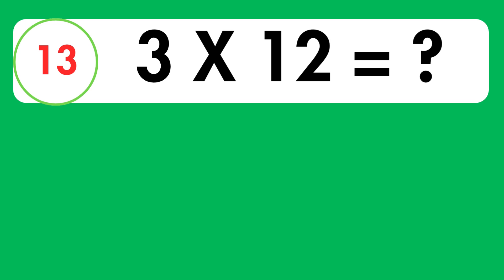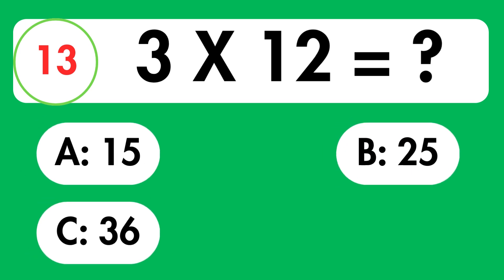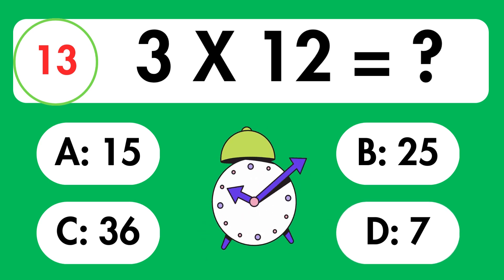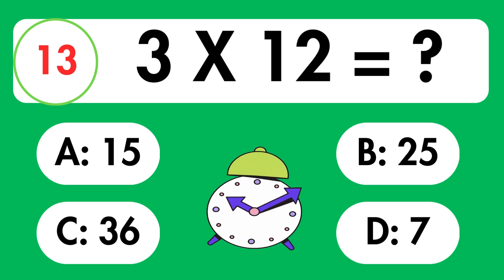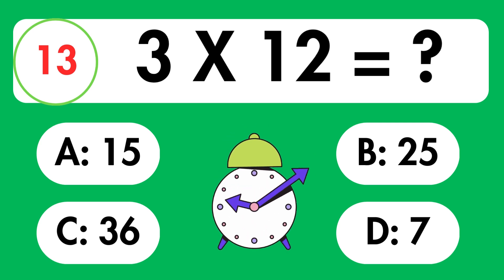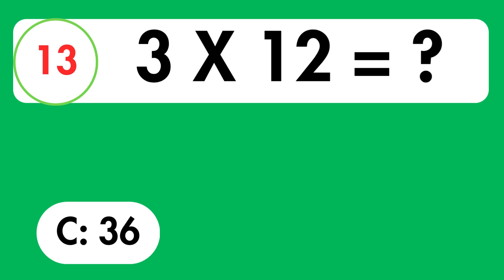11 times 4 is equals 44. Question 13. What is 3 times 12 equals? Time's up. The answer is 36.